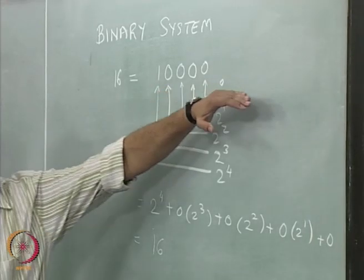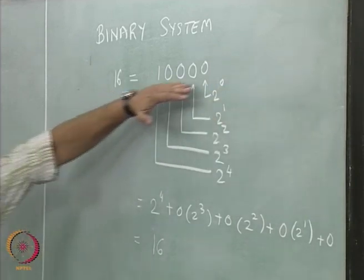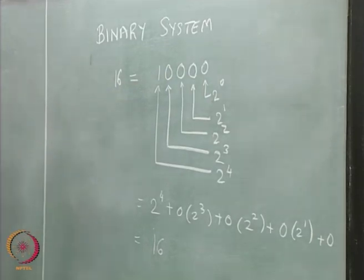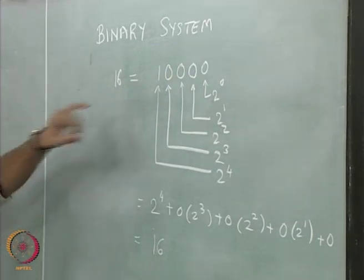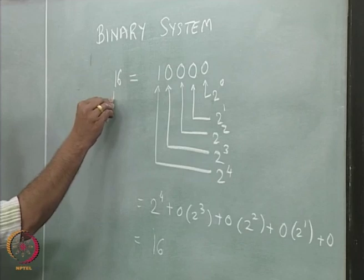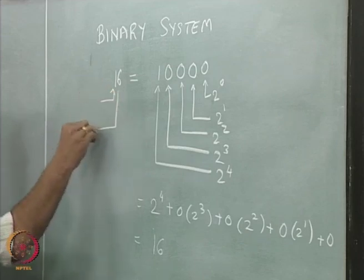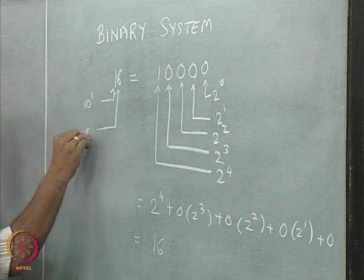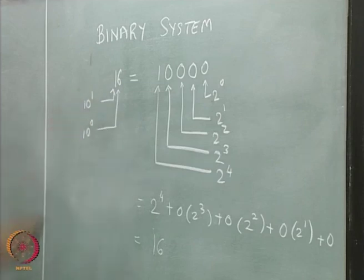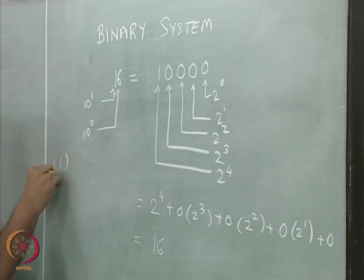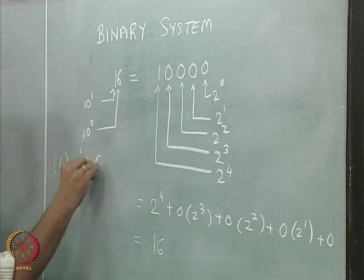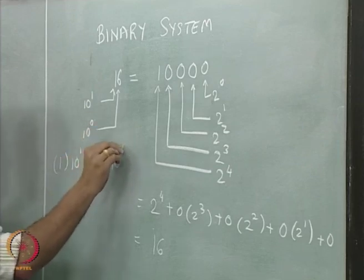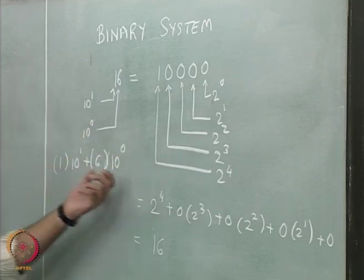This is the binary representation of the number 16 in the decimal representation. Likewise, in the decimal representation, the way we represent a decimal number is: this is going to be 10 to the power 1 and this represents 10 to the power 0. So 16 really is 1 multiplied by 10 to the power 1 plus 6 multiplied by 10 to the power 0, which is 10 plus 6, equals 16.